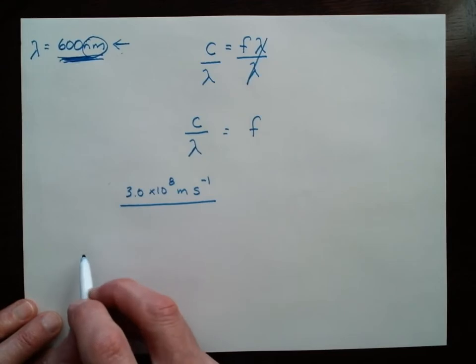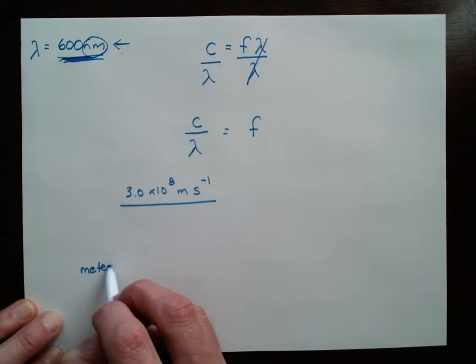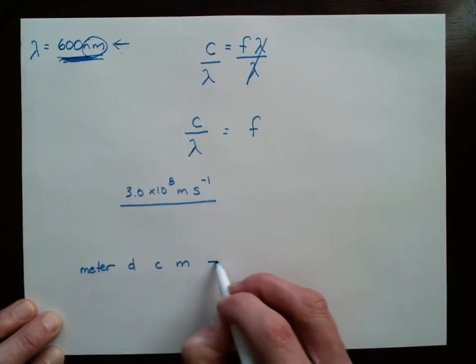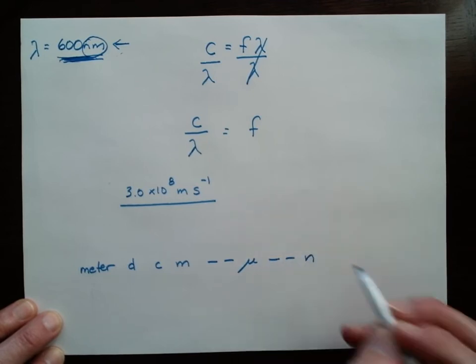So I've got to remember my conversion chart that we used to do. So I'm going to have the meter unit here. And then we have deci, centi, milli, a double dash, micro, and then a double dash, and nano.